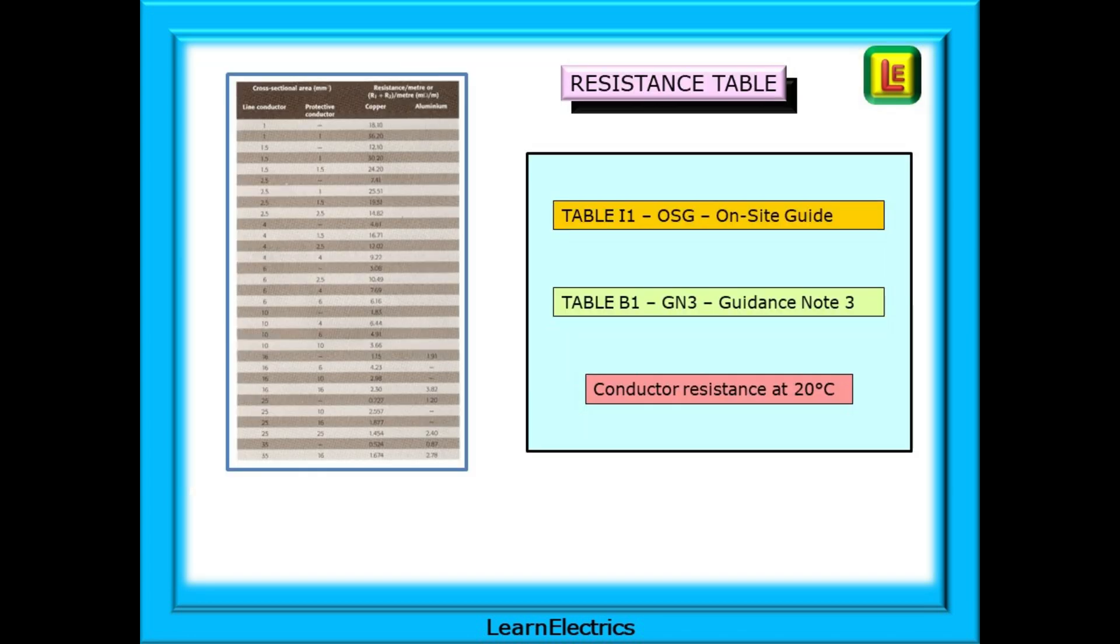This is the resistance table as found in the books and you should have one or more of these books with you when working. It's the same table in both books. If you have the on-site guide this will be table I1 and for guidance note 3 it will be table B1. The tables give values of resistance for a standard temperature of 20 degrees Celsius.